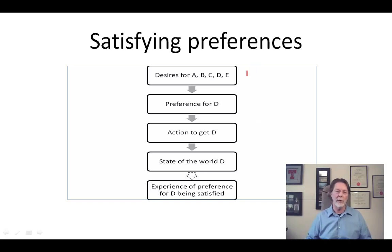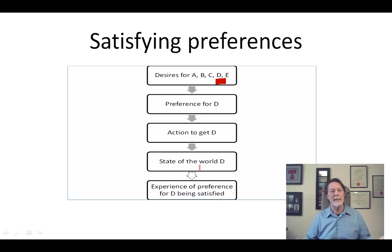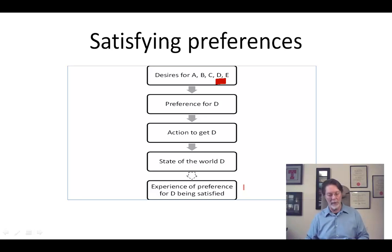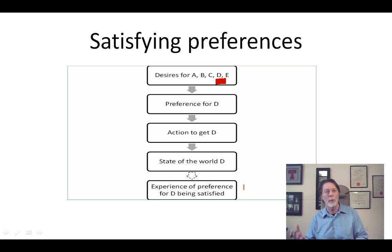You have this idea where this person starts out with a bunch of different wants and desires, chooses from these the one that she wants — which in this case is D — performs an action to get D, resulting in a state of the world D, which is what she wants, and then presumably she gets an experience of having this preference satisfied. A preference is something you prefer amongst all the things that you might want at this point.